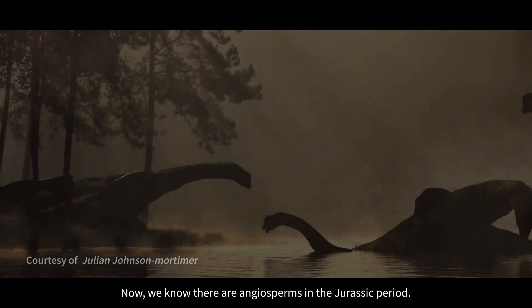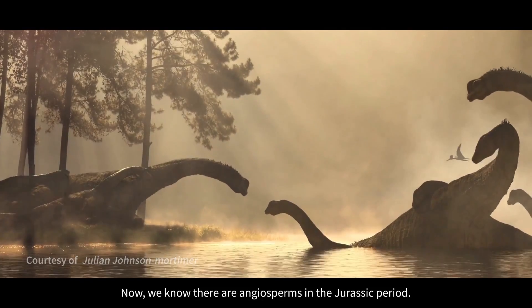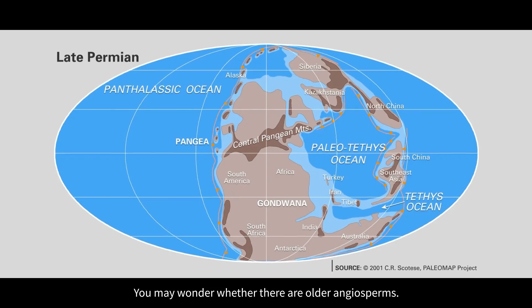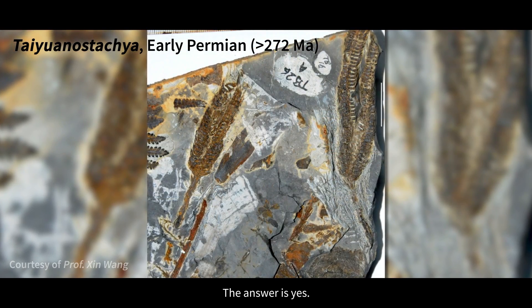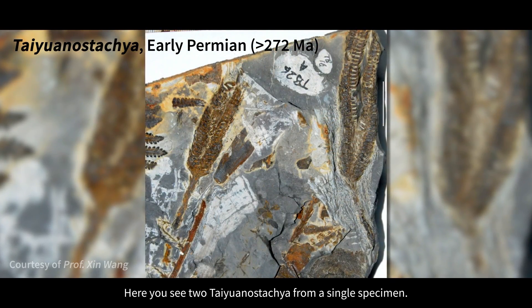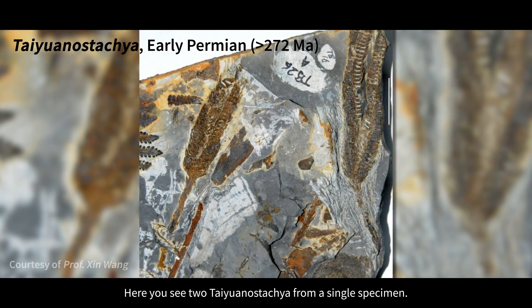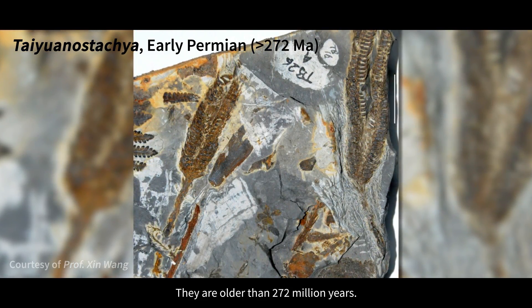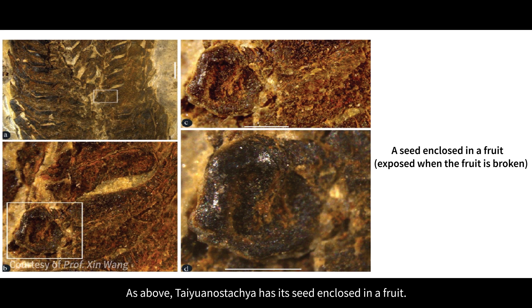Now we know there are angiosperms in the Jurassic period. You may wonder whether there are older angiosperms. The answer is yes. Here you see two Tyuanostechia from a single specimen. They are older than 272 million years. Tyuanostechia has its seed enclosed in a fruit.